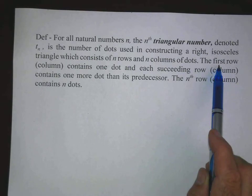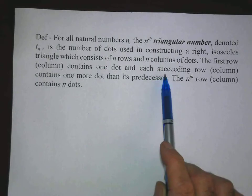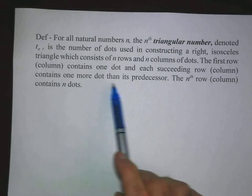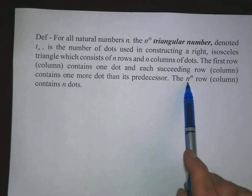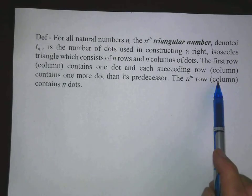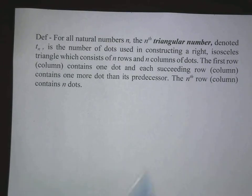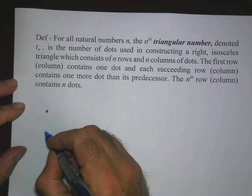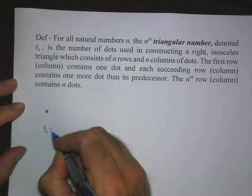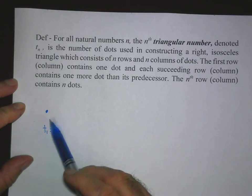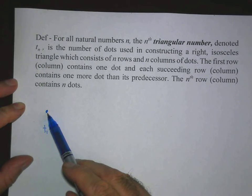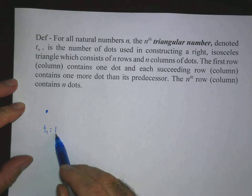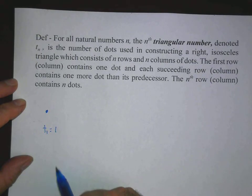The first row, or first column, contains one dot. And each succeeding row or column contains one more dot than its predecessor. The nth row — the last row — or the nth column contains n dots. Let's do a few examples. This is a right isosceles triangle consisting of one row and one column. It has one dot. So T sub 1 equals 1, the first triangular number.